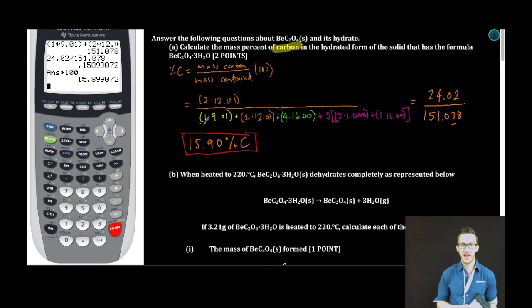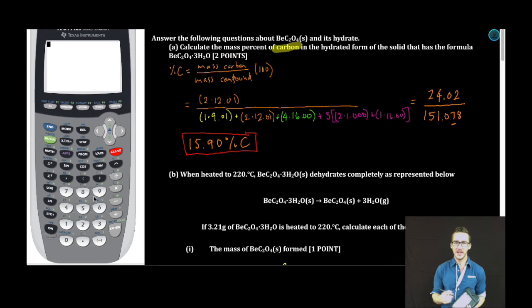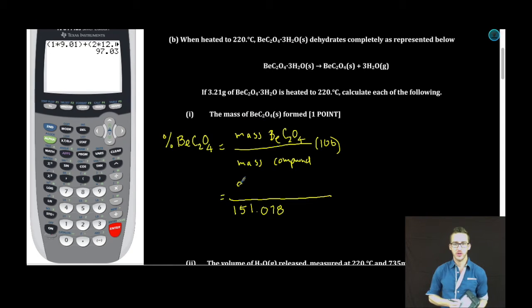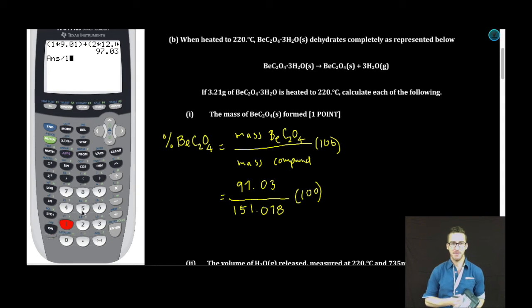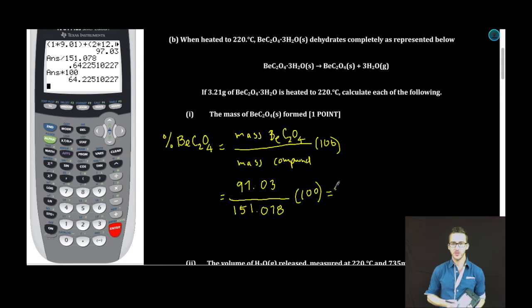If I look back at the previous part, I've already done a lot of the work. Notice that I've already determined the mass of the compound to be 151.078 grams per mole. Now I need to determine what is the mass of the beryllium oxalate without the water. Essentially, I just need to know the mass of the compound without the water. Calculator time, 1 times 9.01, plus 2 times 12.01, plus 4 times 16. This 97.03 represents the mass of just the anhydrous beryllium oxalate. So if I divide that by the mass of the hydrated compound and multiply by 100, keeping in mind the rules for significant figures gives me 64.23% beryllium oxalate.